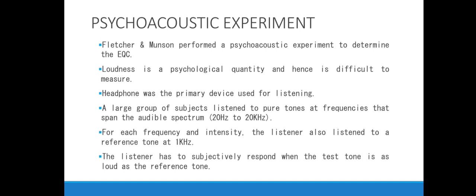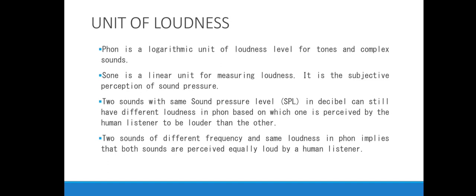What is the unit of loudness? It turns out loudness has two units: phon and sone. Phon is the logarithmic unit of loudness, whereas sone is a linear unit — it is a subjective perception of sound pressure. Two sounds with the same sound pressure level can still have different loudness, where one is perceived louder than the other despite having the same SPL. And two sounds with different frequencies having the same loudness implies they are perceived equally loud by a human listener.